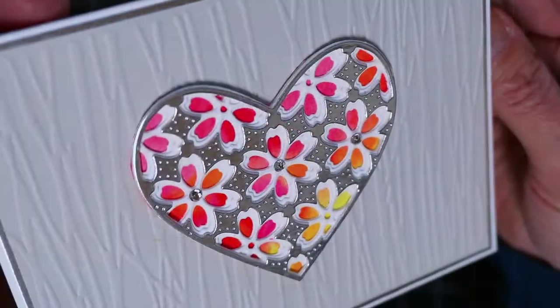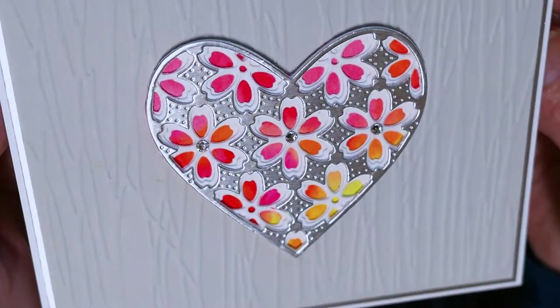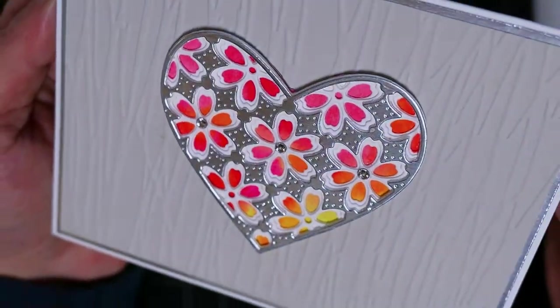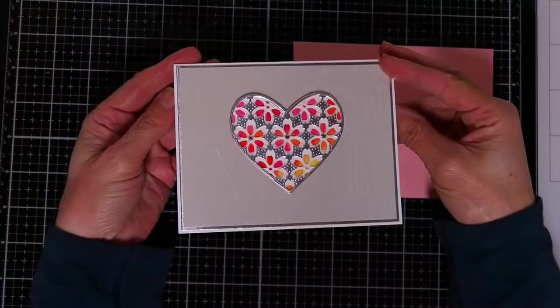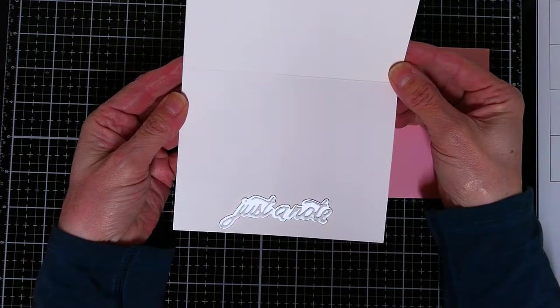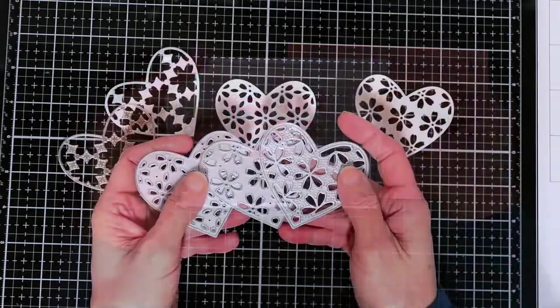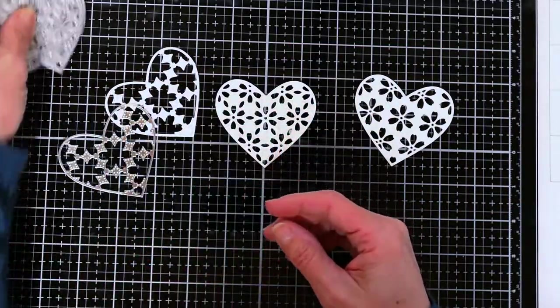So this is a very simple design. I used fog cardstock from Simon Says Stamp and embossed it with an embossing folder and just mounted it onto some silver cardstock. Put a little sentiment on the inside and it's just so simple.